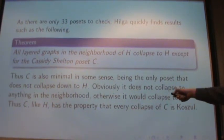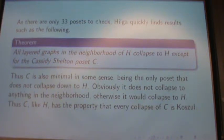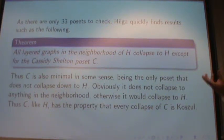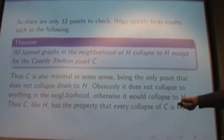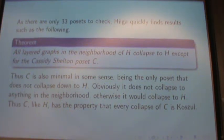All layered graphs in the neighborhood of H collapse to H except for the Cassidy-Shelton poset C. And I felt good because this way that poset is still special. The one that Cassidy-Shelton found, that's still a very special poset because it's minimal in that sense. There's nothing below it in terms of collapsing. If you collapse, it's no longer going to be non-causal. Obviously, it doesn't collapse to anything else in the neighborhood as well. Because if it collapsed to something else in the neighborhood and everything else in the neighborhood collapses to H, then it would collapse to H.